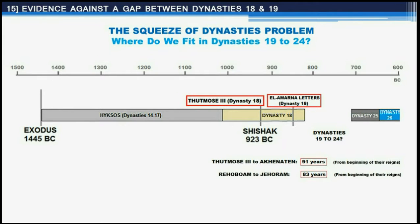Virtually all revisionist chronologists agree with the conventional chronology that Egypt's chronology from the 25th dynasty onward is mostly settled and fixed. The 25th dynasty can be cross-checked with Assyrian data and is dated to around 700 BC. Taharka, one of the Ethiopian 25th dynasty pharaohs, was a contemporary of Hezekiah according to the Bible. If the 25th dynasty starts only a hundred years after the end of the 18th dynasty, where do we fit in Ramesses the Great's 19th dynasty, the 20th dynasty of Ramesses III, and the Libyan dynasties? Can they all be squeezed into a brief hundred years?